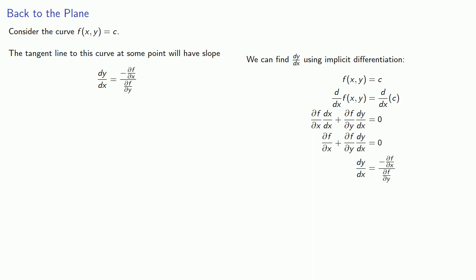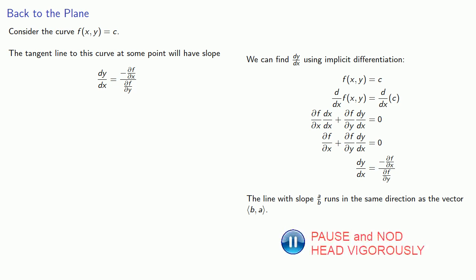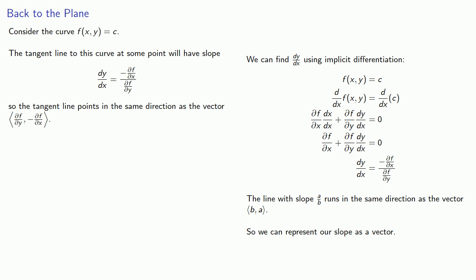Now, remember that the line with slope a divided by b runs in the same direction as the vector (b, a). So we can represent our slope as a vector. And so the tangent line points in the same direction as the vector.